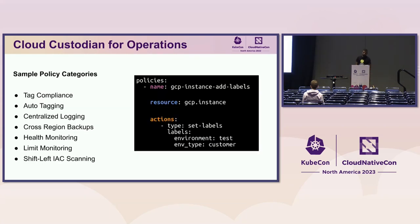And then operations use cases, which is a grab bag for lots of different things. You might do centralized logging, cross-region backups, make sure you're not getting cross-AZ traffic on your NATs or ASGs to your database. Lots of different use cases pop up for operations as well.